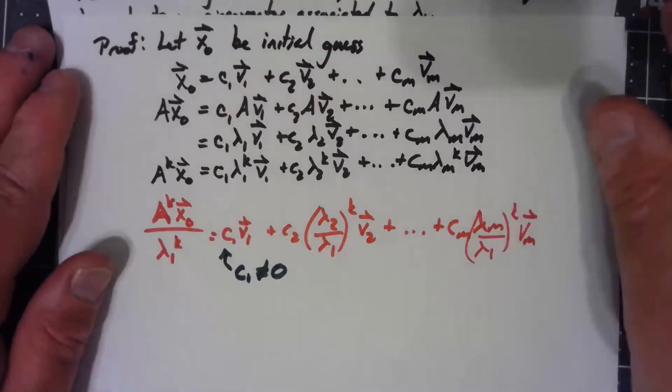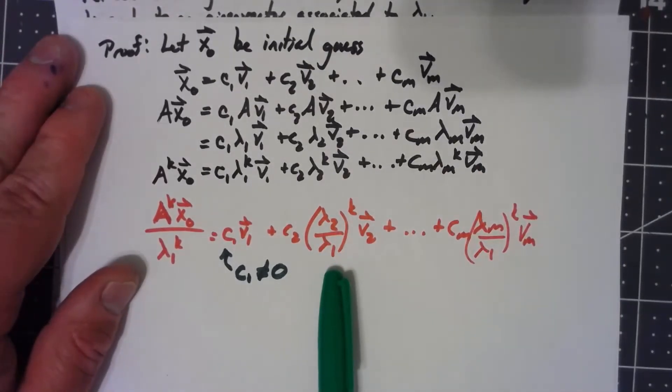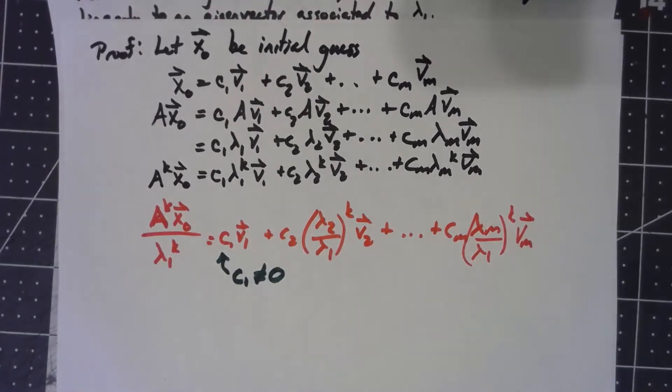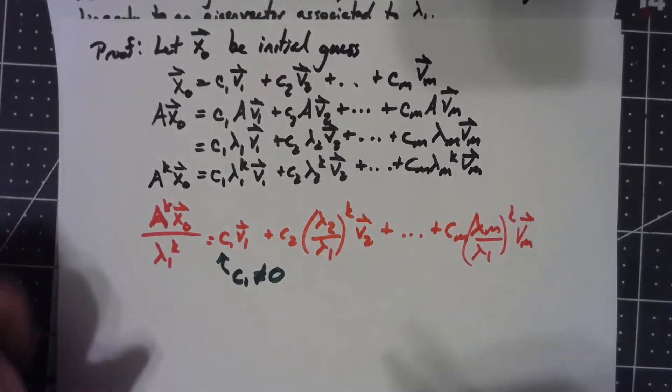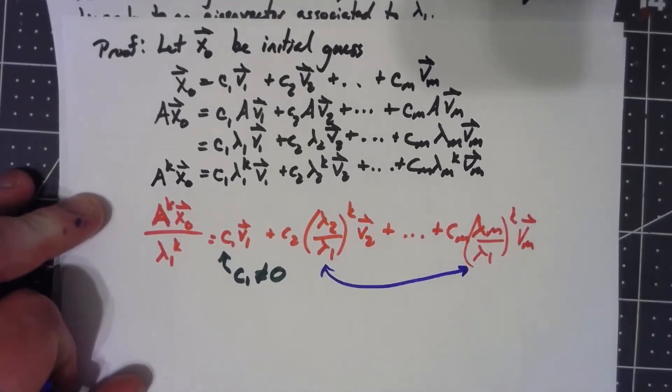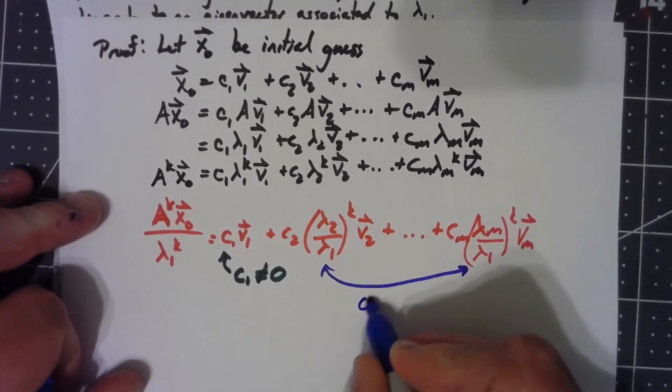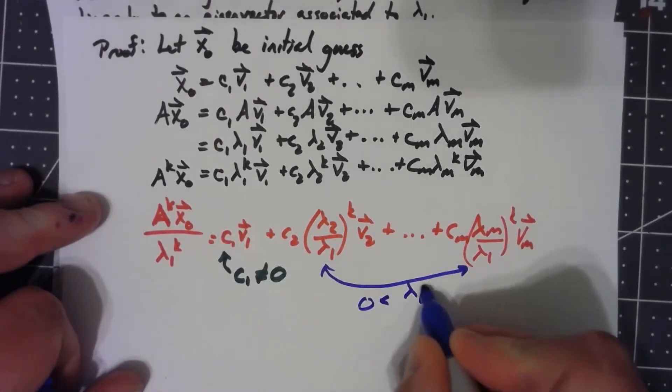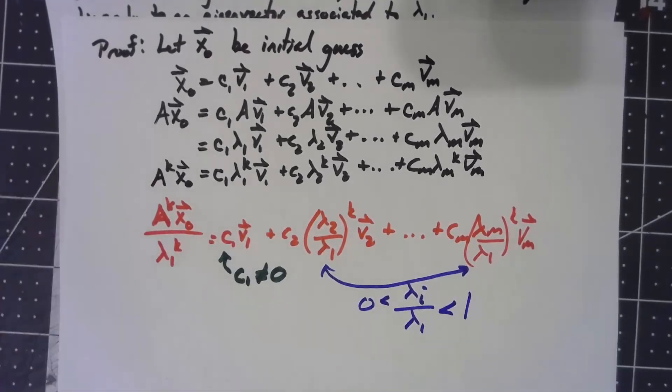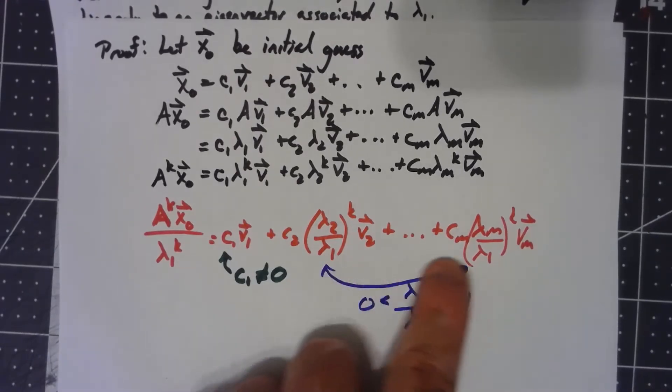Well, our assumption was that all of the other eigenvalues were smaller than lambda_1. So each of these things here, and there'll be ones for all the intermediate terms as well, all those things have to be between 0 and 1. When I start taking them to higher and higher powers, all these things have to be going to zero.